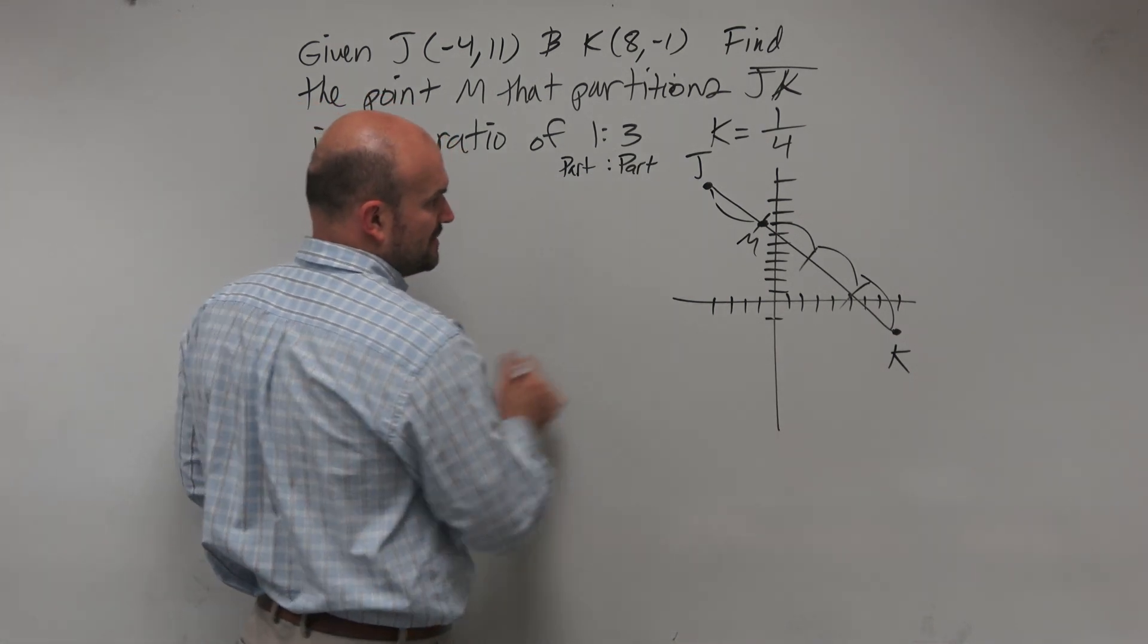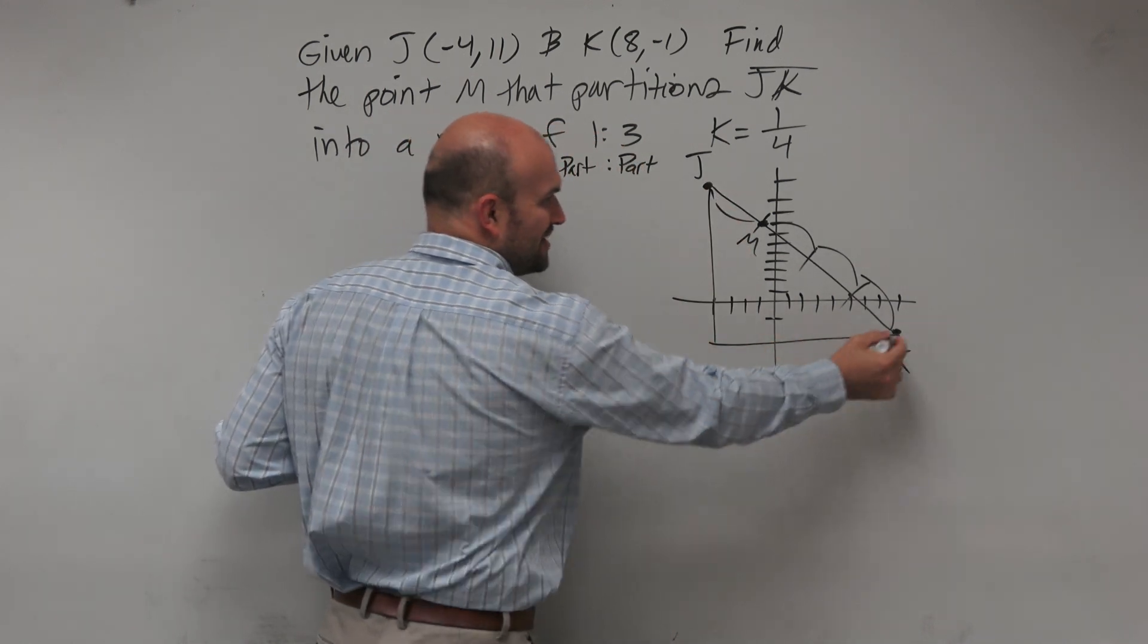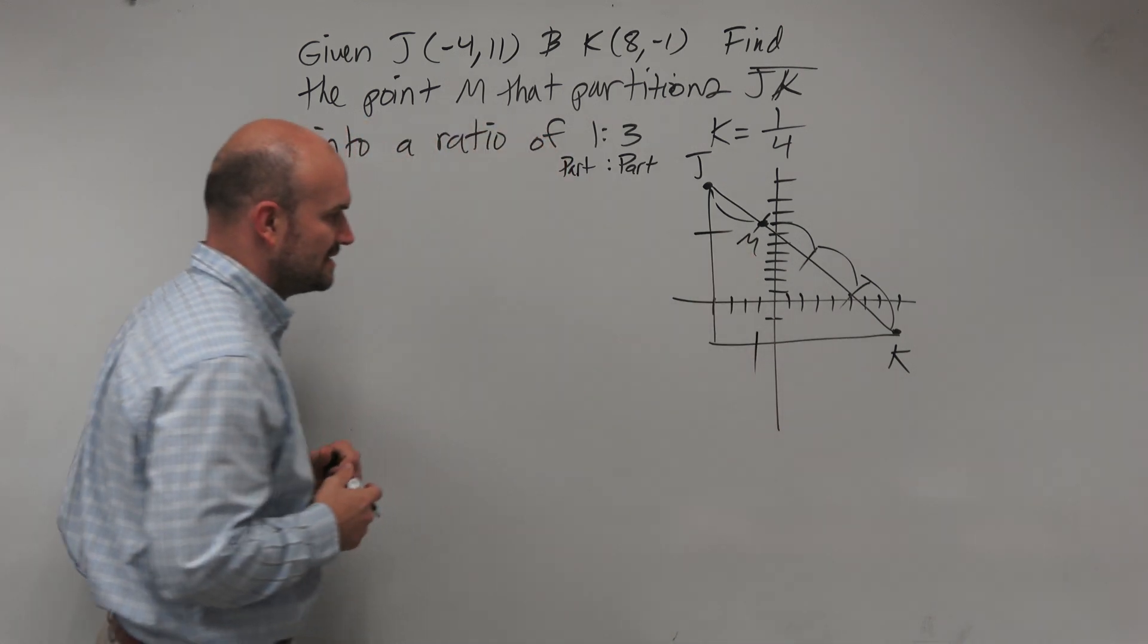So when we want to find the partition points, we need to do this vertically and horizontally. So we want to break it 1 to 4 vertically and 1 to 4 horizontally.